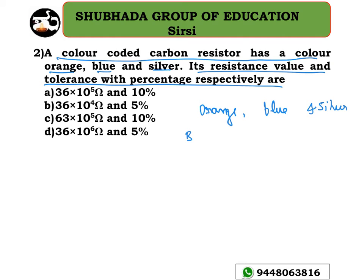To solve this, remember the mnemonic BB ROY of Great Britain has a Very Good Wife wearing Gold Silver necklace. Using this, we assign digits: B=0, B=1, R=2, O=3, Y=4, G=5, and so on. Orange corresponds to 3.